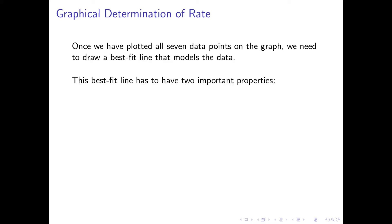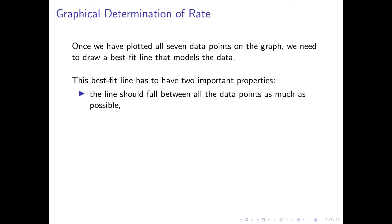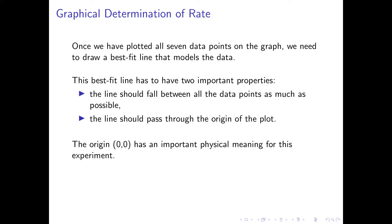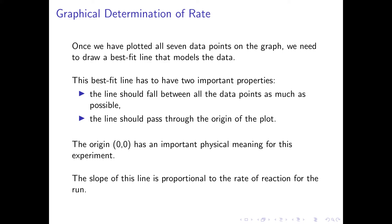This best-fit line has two important properties. First, the line should fall between all the data points, lying as close as possible to each of them. Second, the line should pass through the origin of the plot. The origin, or zero-zero, has an important physical meaning for this experiment — please consider what this meaning is. The slope of this line is proportional to the rate of reaction for that particular run.